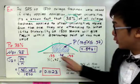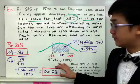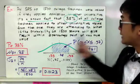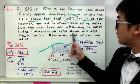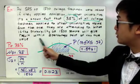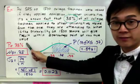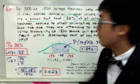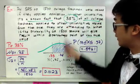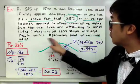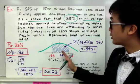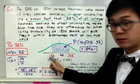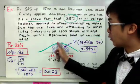Now that we have our normal distribution, our mean and the standard deviation, let's answer the problem. What is the probability that of 1500 samples it will give results within two percentage points of the true value? The true population proportion is 0.35, so plus or minus two percentage points gives us 0.33 and 0.37.